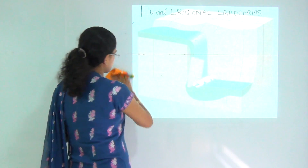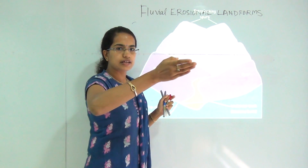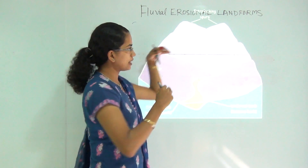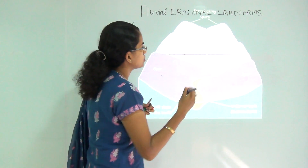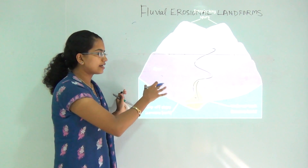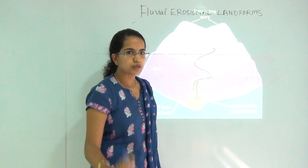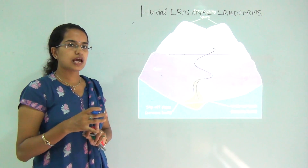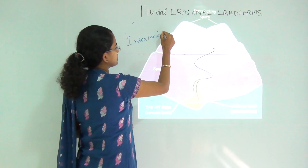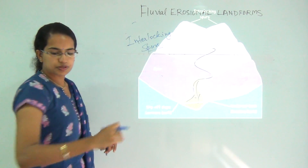The next landform is interlocking spurs. What are interlocking spurs? You have a series of mountains, and the river forms protrusions trying to move in the direction of the hills. So you have one hill crossing one way and another spur going the other way, and the river has to follow this winding path. This is similar to a meandering river but is not exactly a meandering river, because meanders are an erosional-depositional landform, meaning both erosion and deposition occur. But in the case of interlocking spurs, you only have erosional features. The river moves between the mountains.